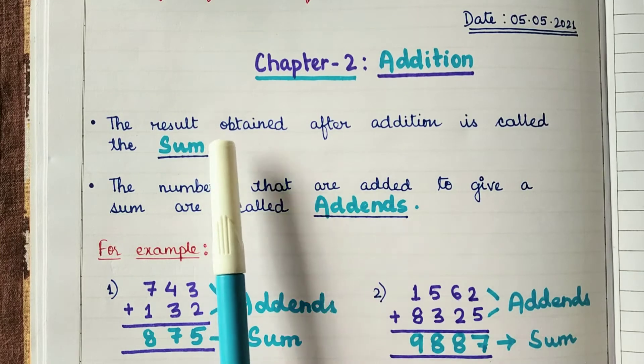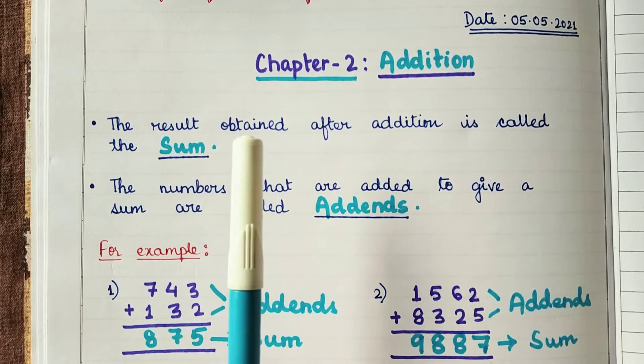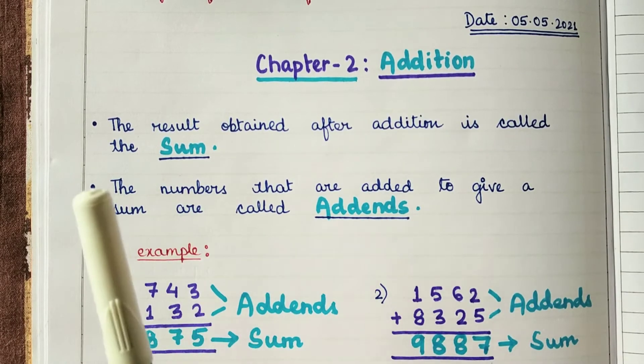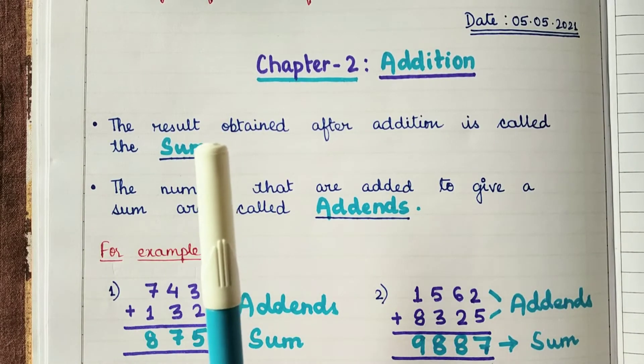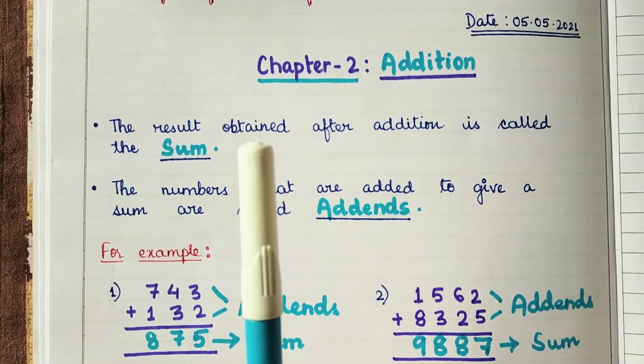First term: sum. What is a sum? The result obtained after addition is called sum. The result which we obtain after adding two or more numbers is called a sum.